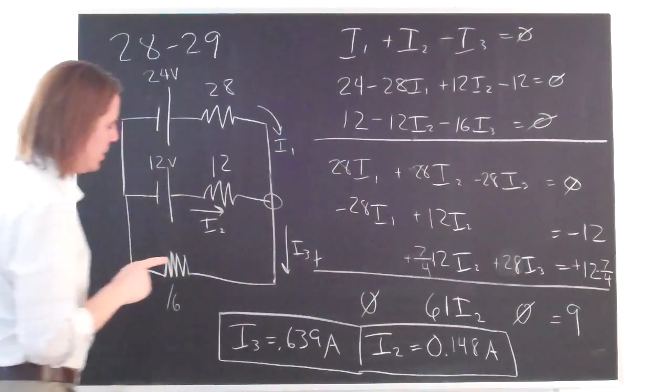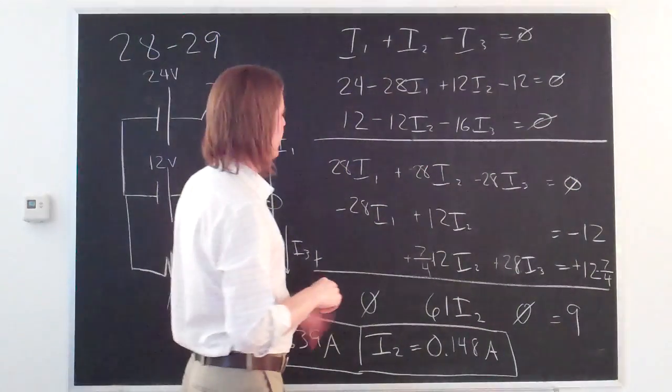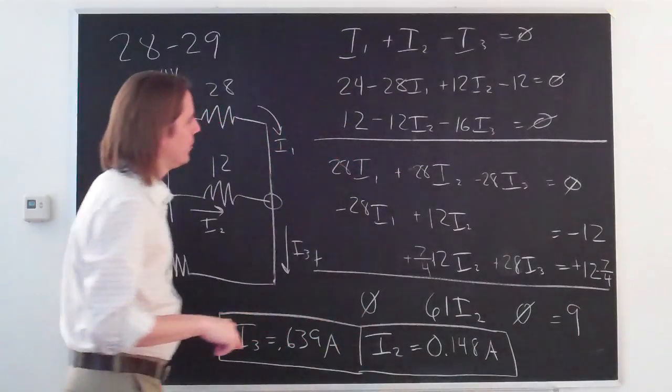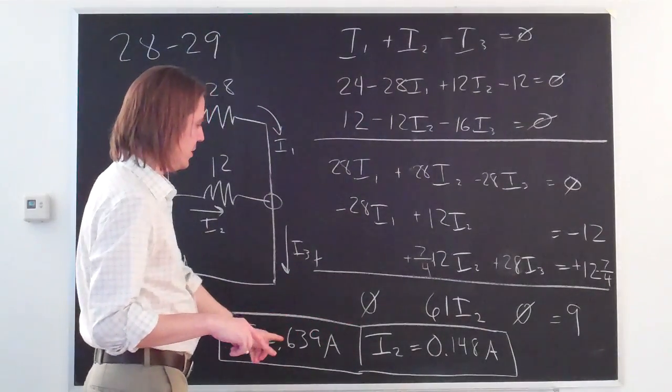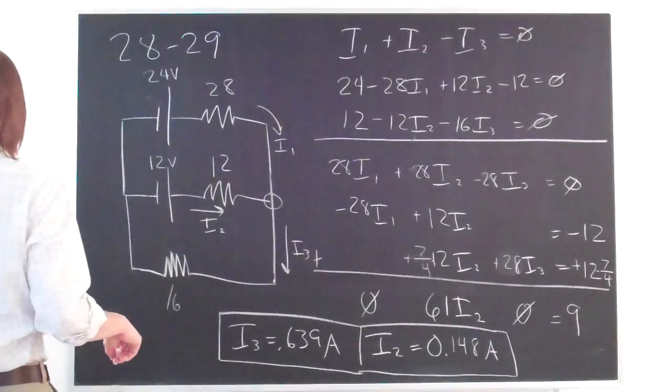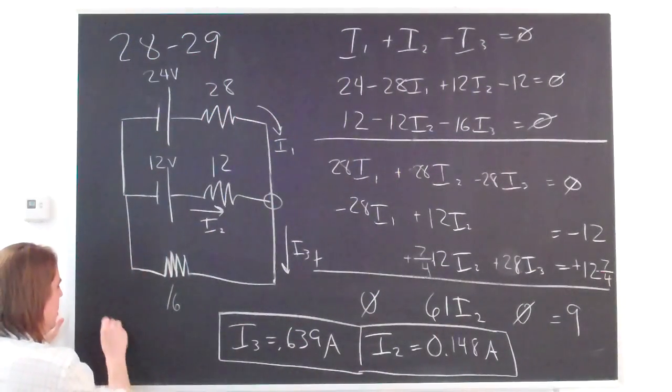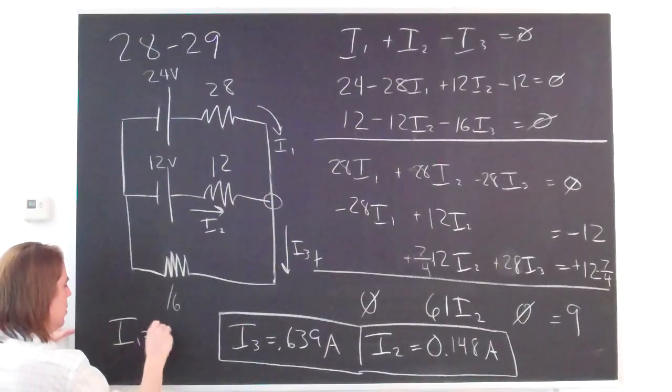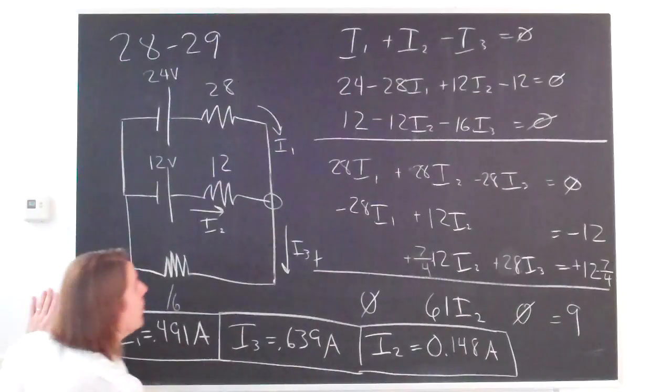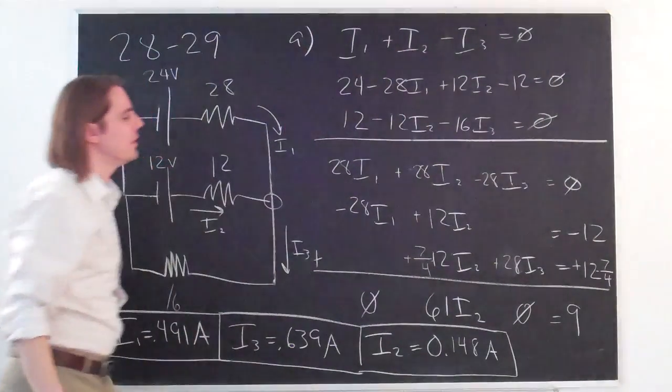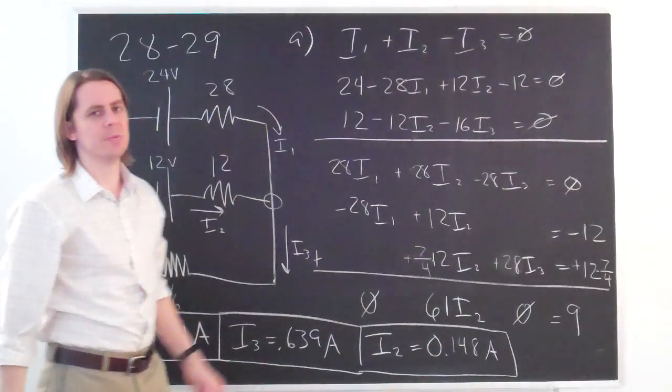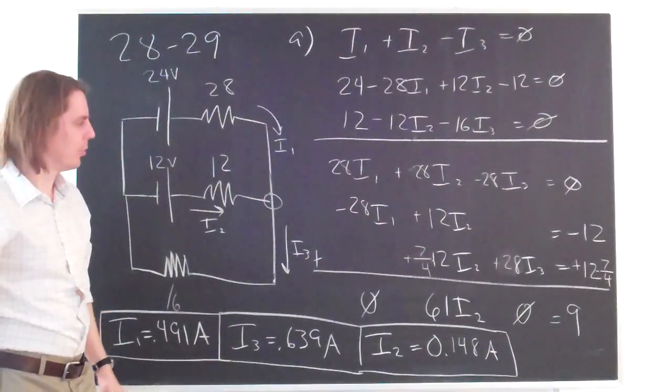Now we have I2 and I3. So we could easily get I1 then from this equation, or we can just get it from that equation. We can say I2 minus I3 is going to be some negative number that comes over here to make it positive. And I1, if you do that little subtraction, is 0.491. So that's the answer to part A. That's how you get the answer to part A. That's one way to deal with these systems of equations. So now we'll clean up the board and do part B.